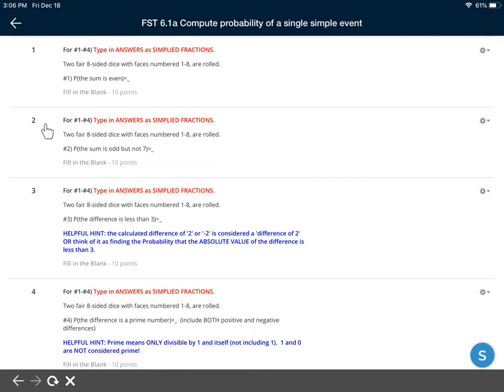Now question one and question two are looking at the sums of the events, whereas question three and question four are looking at the differences. So what you could do for any of these four problems is you could set up a visual grid to see what two eight-sided die look like. So let me do that first.